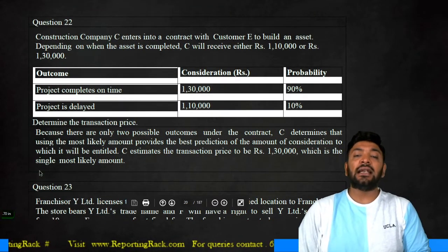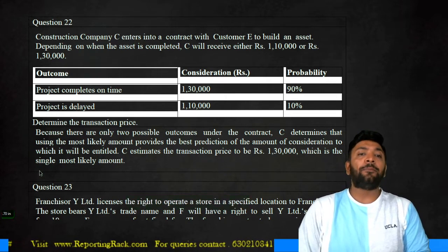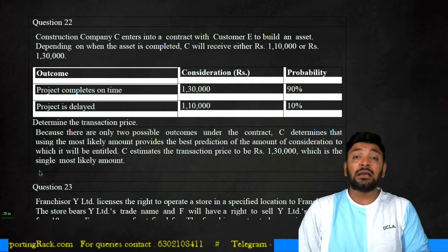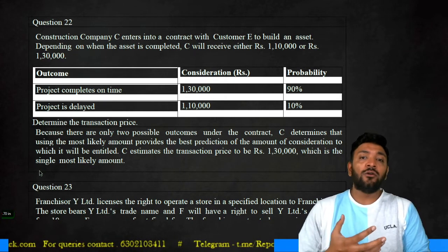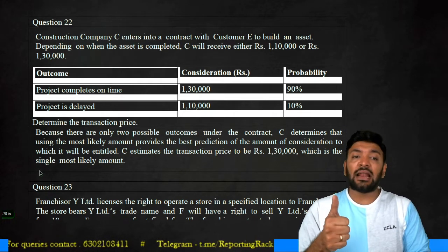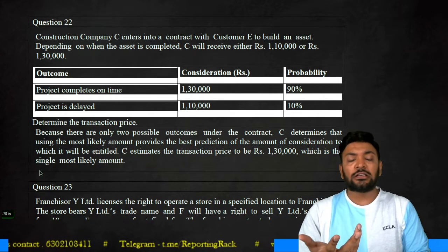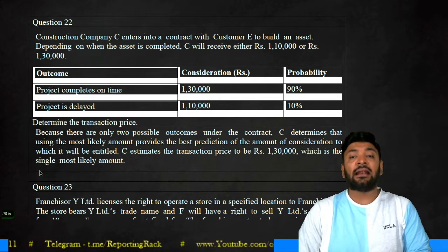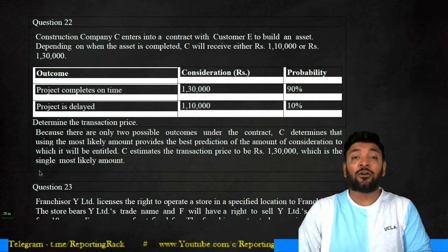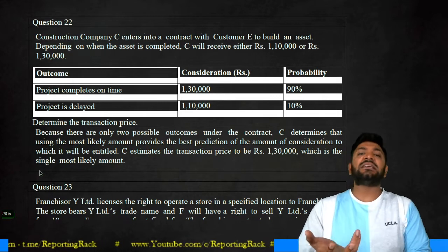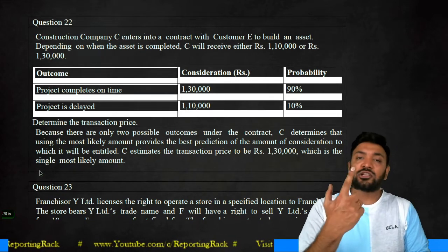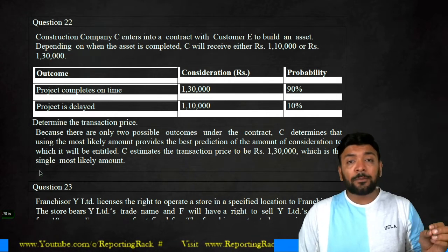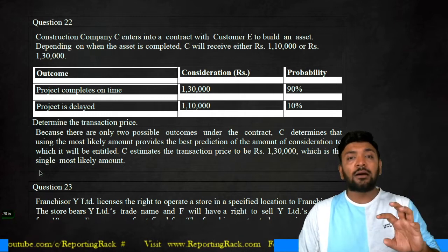A construction company C enters into a contract with customer E to build an asset. Depending on when the asset is completed, C will receive either 110,000 or 130,000 — again, a transaction price with multiple outcomes. If completed within the particular time, they receive 130,000; if not completed on time, it is 110,000. The probability that the project will be completed on time is 90%, while the probability of not completing on time is only 10%. In this case, do not go with expected value — because the multiple outcomes available are only two.